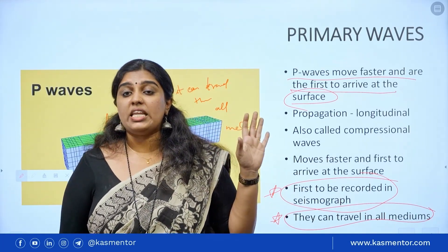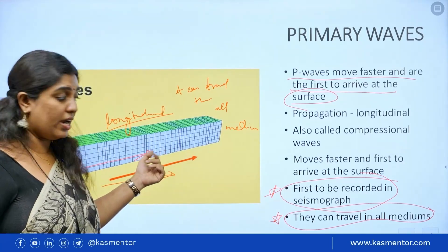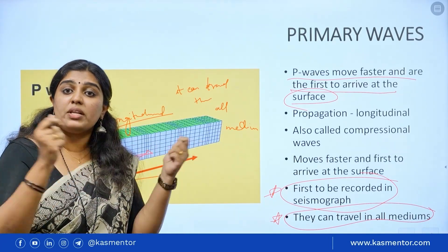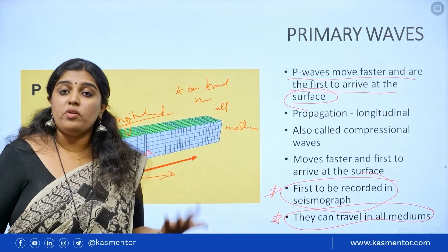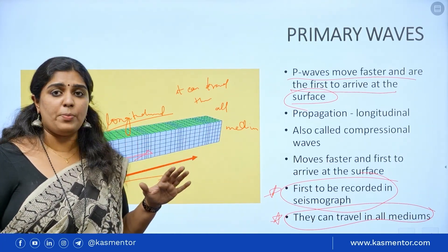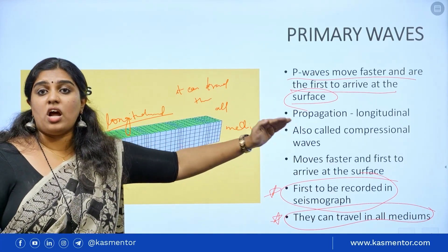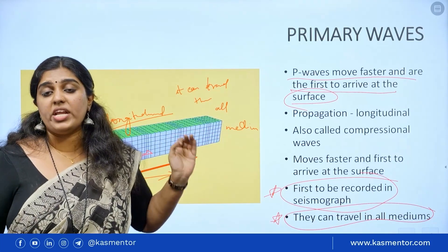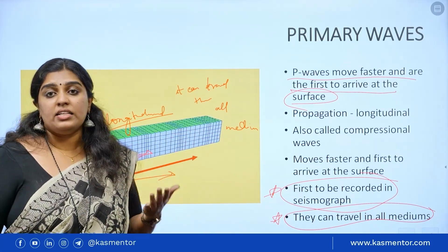This is what we call a compressional motion — a two-and-fro motion, also called push-pull waves. It has longitudinal propagation, meaning the wave direction is parallel to the particle movement direction.